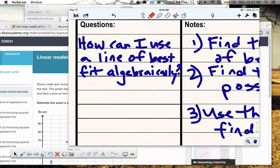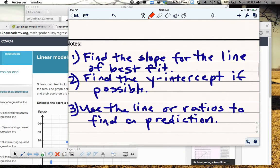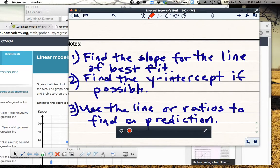How can I use a line of best fit algebraically? That means that sometimes the line that you draw, you'll be asked to make a prediction for something that is not shown nicely by the graph. And so the first thing you need to do is find the slope for the line of best fit. And I'm going to go over an example here in just a moment. Second, you're going to find the y-intercept if possible. You can't always do that. And then third, you're going to use the line or ratios to find a prediction. And so when I say that, you're going to have to do some ratios work using the slope, or you're going to have to find the equation of the line and then just plug in x and calculate for y. So let's look at a couple of examples here.